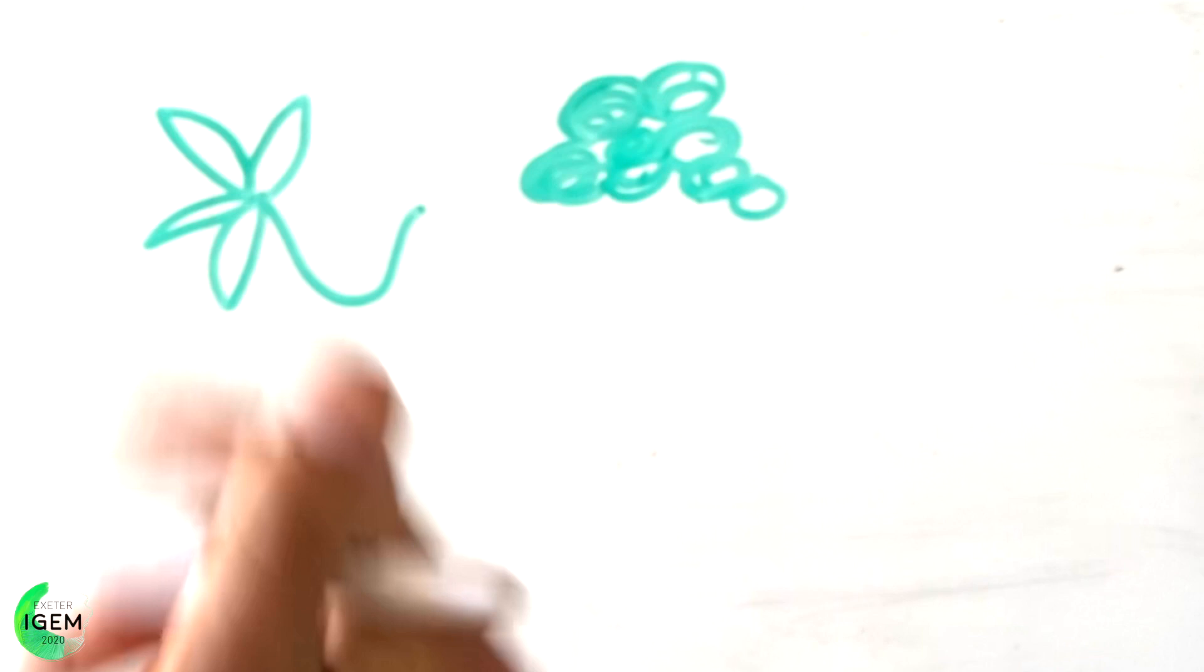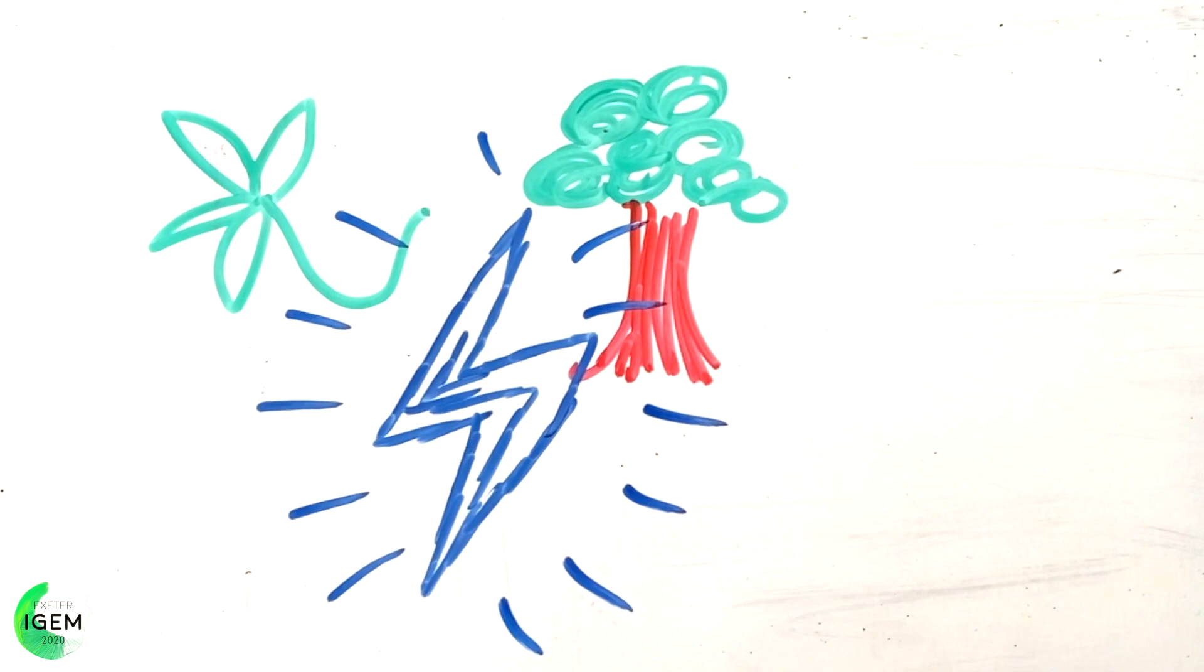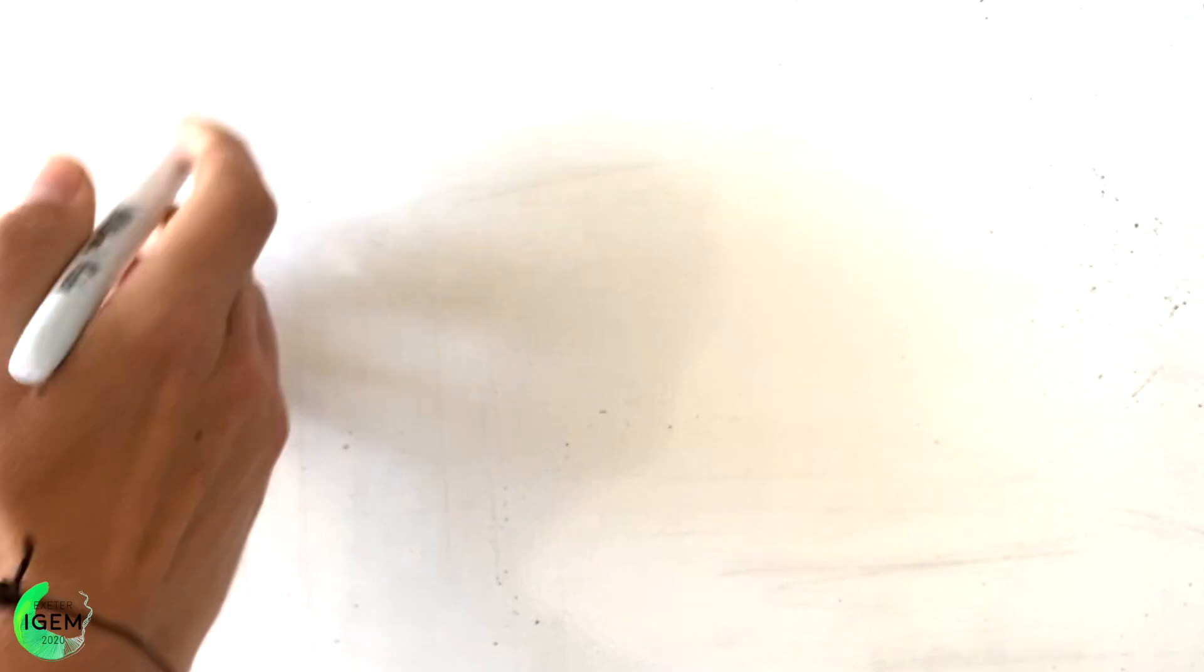And now onto our final topic of biological electrodynamics. Normally, we wouldn't really think of biological life as being electronic. However, every organism is teeming with electrical activity. Nerve cells carry electrical signals from receptors to the central nervous system, which is why we can feel things such as temperature.